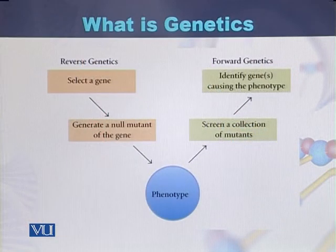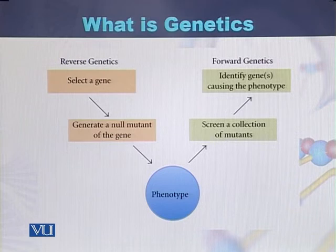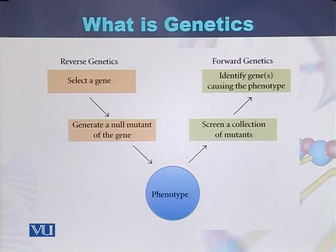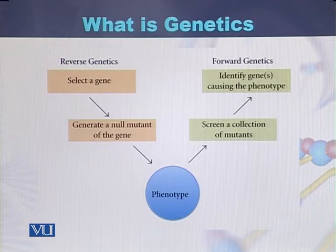Genetics can be studied in two different ways. One way is called reverse genetics while the second method is called forward genetics. In reverse genetics, a researcher or geneticist selects a particular gene, creates certain mutations in that gene, and then identifies phenotypes based on those mutations.